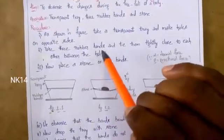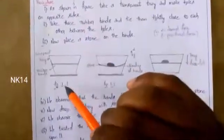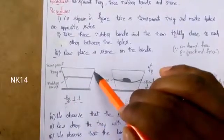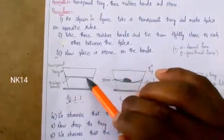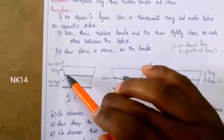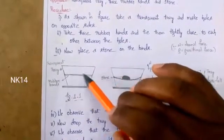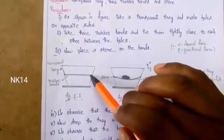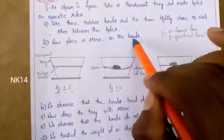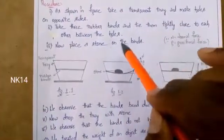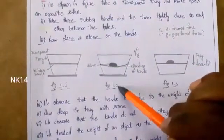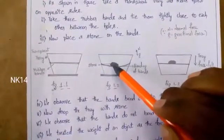Take three rubber bands and tie them tightly, close to each other, between the holes on opposite sides of the tray. Next, place a stone on the rubber bands. Whatever stone we have taken should be placed on the rubber bands, as shown in figure 1.2.